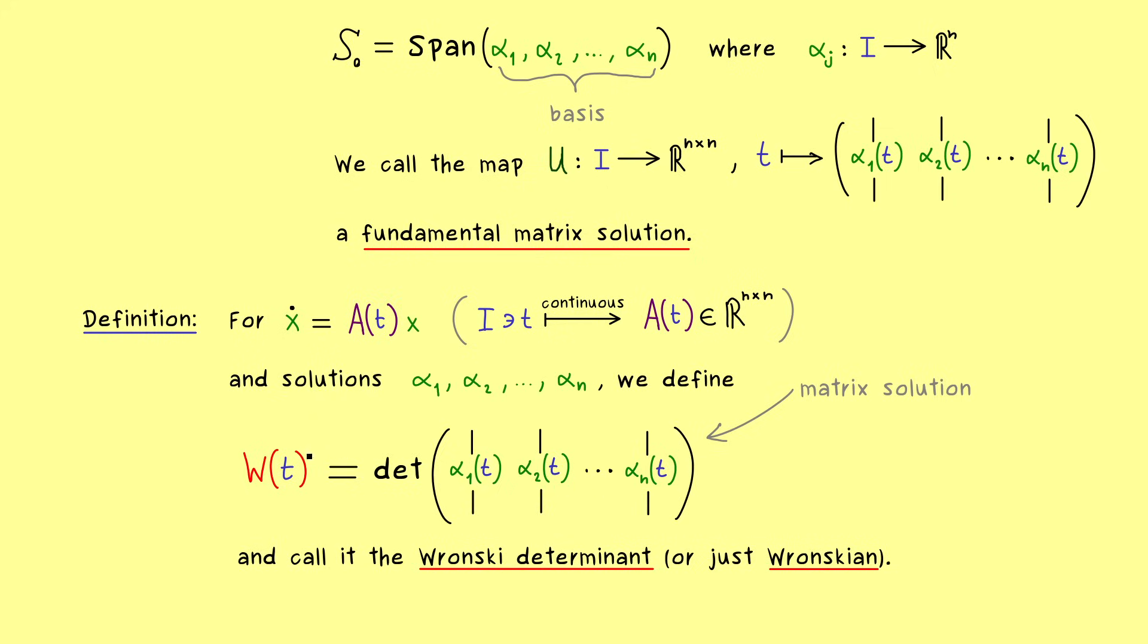So for example, if we find one t in I where this determinant is non-zero, then we can immediately conclude that the vectors here as functions are linearly independent.